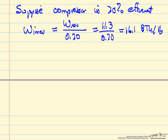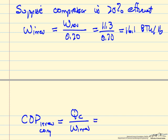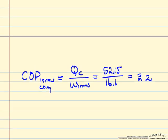This means if we recalculate the coefficient of performance for the irreversible compressor, again QC over work irreversible. QC has not changed, 52.15 divided by 16.1, so we have a significantly lower coefficient of performance. Of course QH has also changed in this process.